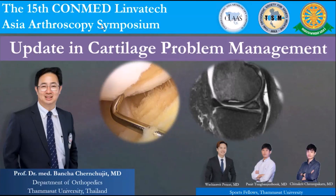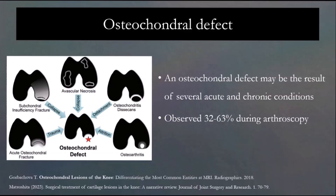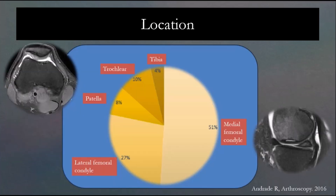The cartilage problem is getting easier for general orthopedics. These are the conclusions of the cartilage problem. There are varieties like osteonecrosis, OCD, OA, osteochondral fracture, and subchondral insufficiency fracture.